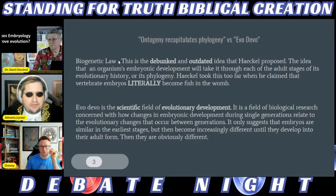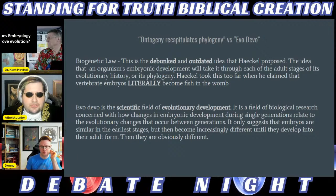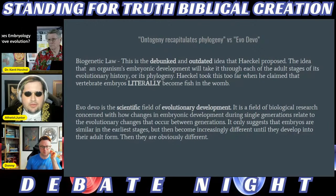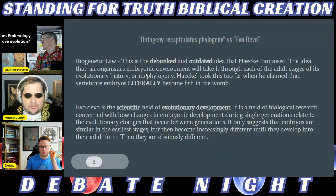Ontogeny recapitulates phylogeny, also called the biogenetic law, is a debunked and outdated idea Haeckel proposed. It's the idea that an organism's embryonic development takes it through each adult stage of its evolutionary history. Haeckel took this too far when he claimed vertebrate embryos literally become fish in the womb.